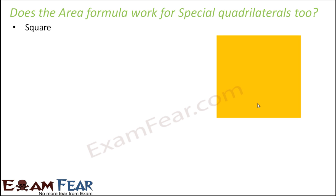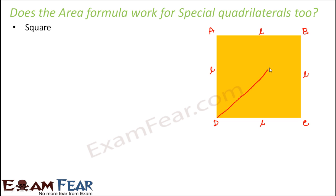Let's check if this works for the special quadrilaterals discussed before. Consider the example of a square. We know that the area of a square is equal to side squared, or L squared. Let's assume this is a square ABCD where each side length is equal to L. Let's try to find its area using the area formula for a general quadrilateral. The first step is to draw the diagonal — so let us draw diagonal BD.